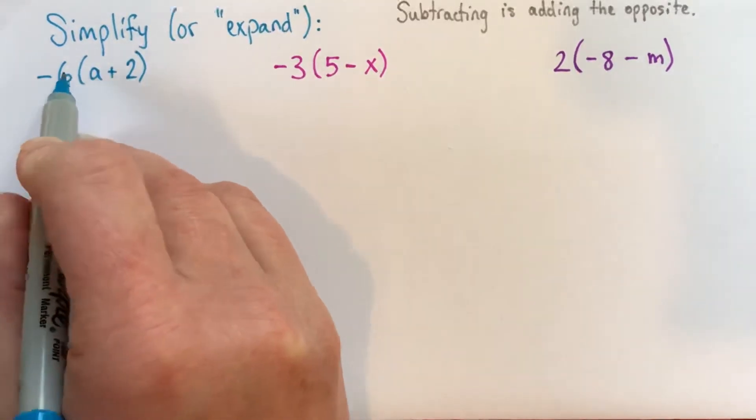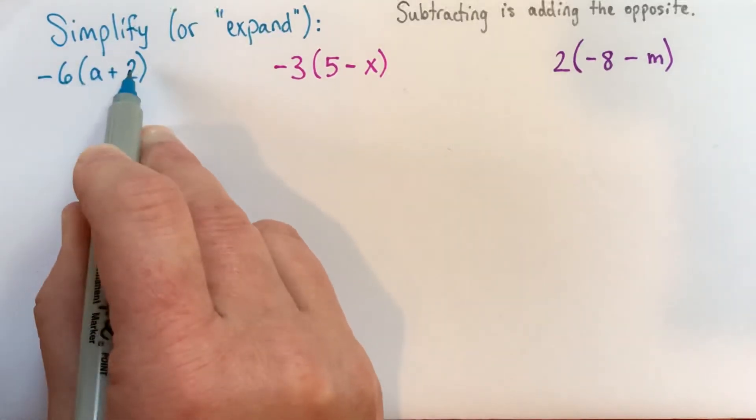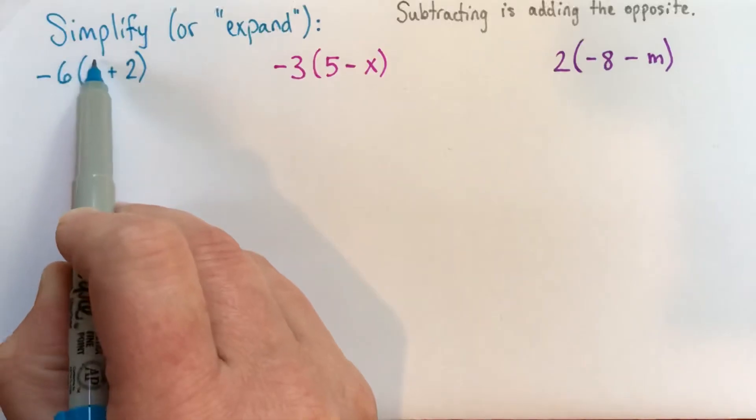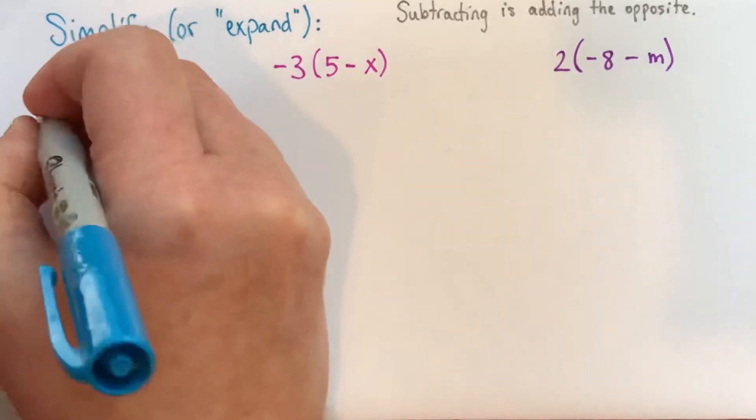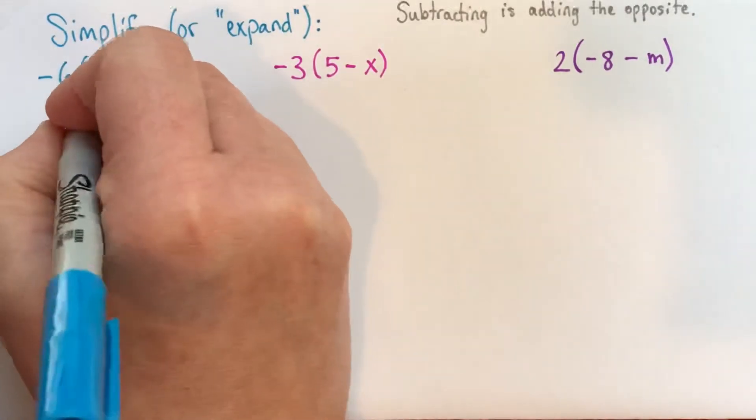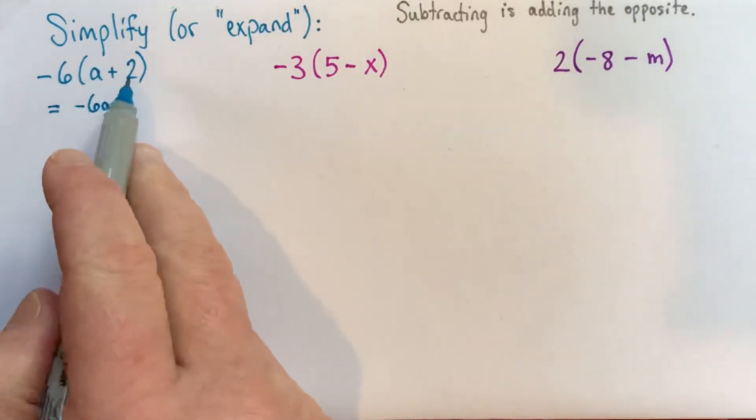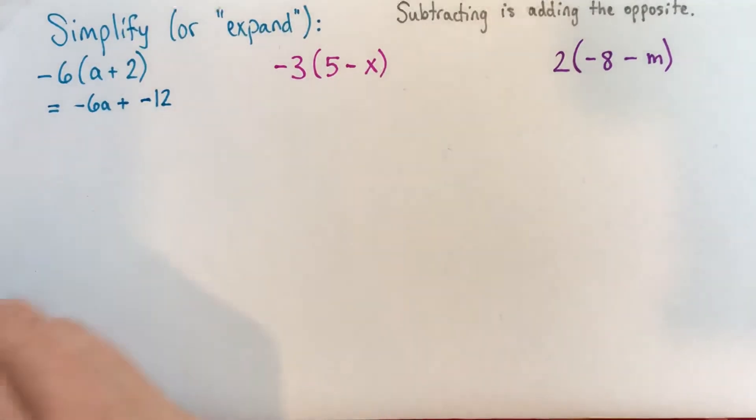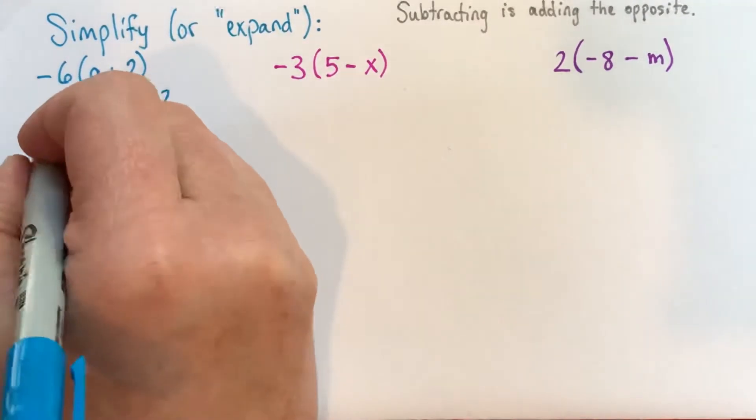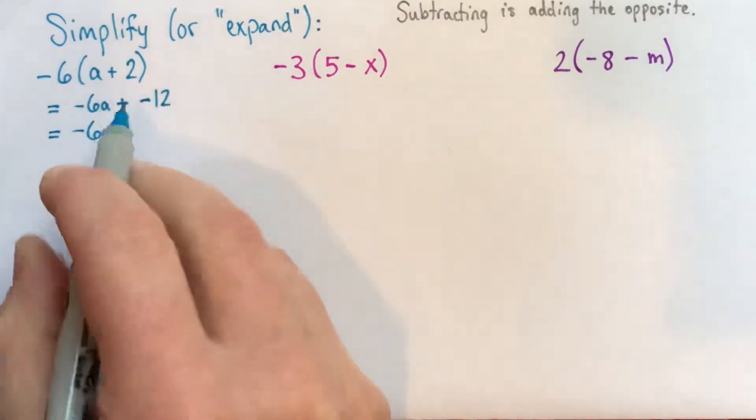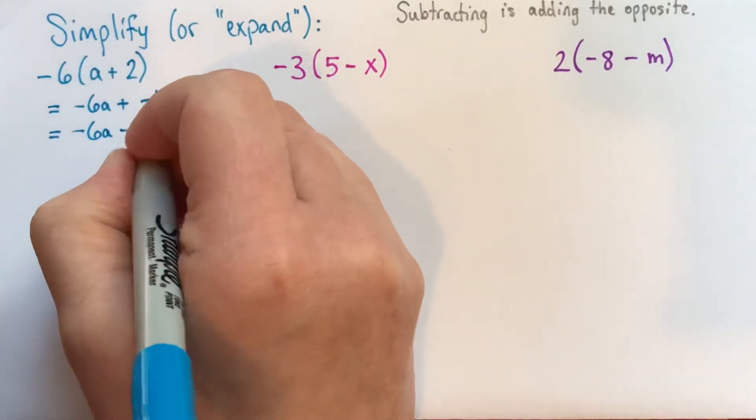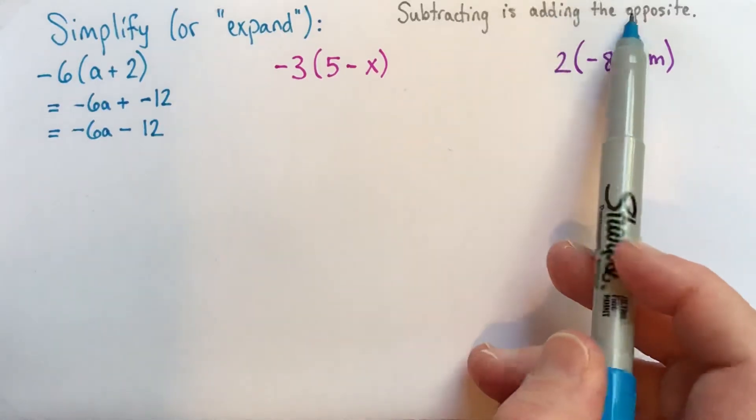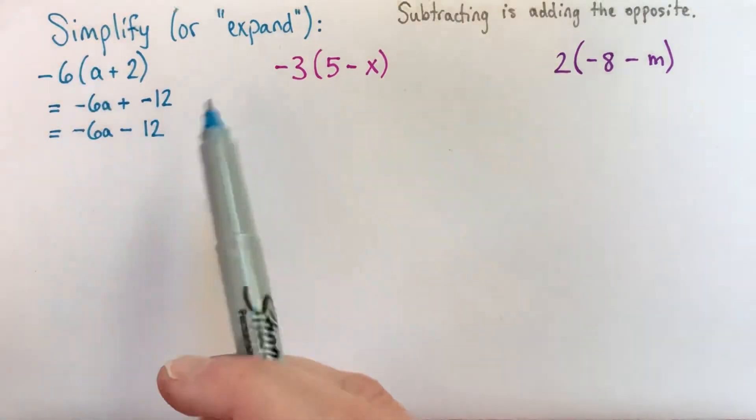Here we have negative 6, and the negative 6 is multiplying a plus 2, this whole quantity in here. And one way we can sort of imagine using the distributive property is taking this negative 6, and I often draw little curvy lines, negative 6 times a and negative 6 times 2. So negative 6 times a is negative 6a, and negative 6 times 2 is negative 12. And negative 6a plus negative 12, to have the answer be as simple as possible, it's easier if we write that plus negative 12 as just subtract 12. I'm going to use several times this property that subtracting something is just the same as adding the opposite. So subtracting 12 is the same as adding negative 12.